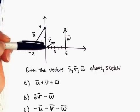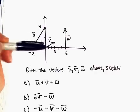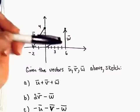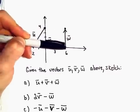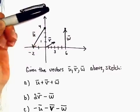We have v that starts at the origin and stops at the point (3, 1). And then we have the vector w that starts at (6, 0) and stops at (6, 4).